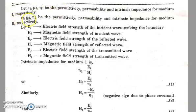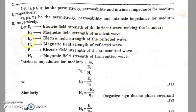Similarly, let epsilon2, mu2, and eta2 be the permittivity, permeability, and intrinsic impedance for medium 2. EI is the electric field strength of the incident wave, HI is the magnetic field strength of the incident wave, ER is the electric field strength of the reflected wave, HR is the magnetic field strength of the reflected wave, ET is the electric field strength of the transmitted wave, and HT is the magnetic field strength of the transmitted wave.